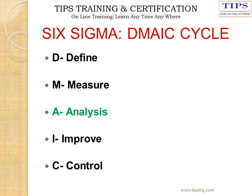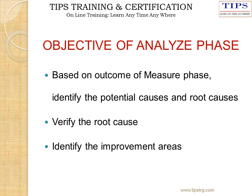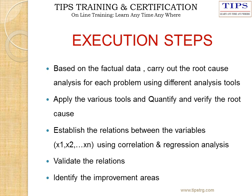This is the third phase of the DMAIC cycle: the Analysis Phase. The objective of this phase, based on the outcome of the Measure Phase, is to identify the potential causes and root causes, verify the root causes, and identify the improvement area. The execution steps involve using the factual data collected in the Data Collection Sheet and carrying out root cause analysis for each problem using different analysis tools.